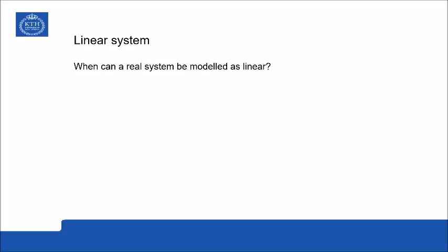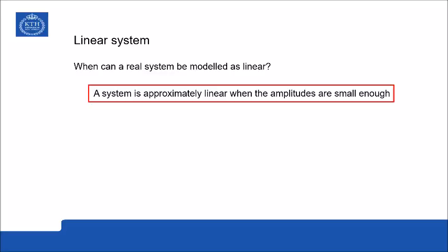So when can we treat the real system as a linear system? We can say that a system is approximately linear when the amplitudes are small enough. And approximately means, of course, that there are no perfectly linear real systems. All real systems contain some nonlinearities, but the question is when we can approximate them as linear without doing too large errors.